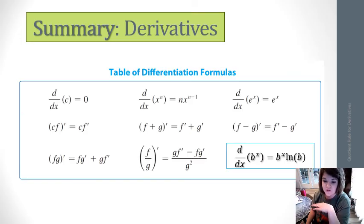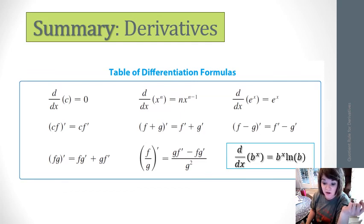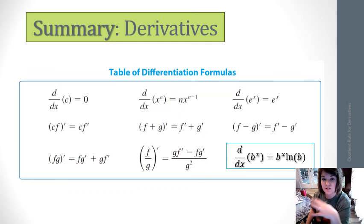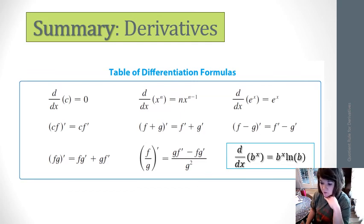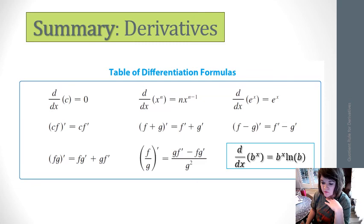Look over this table of differentiation formulas and note all the ones we've learned: the derivative of a constant is zero, a constant times a function brings it down, the power rule (bring down the exponent and reduce the power by one), the derivative of e^x, the derivative of an exponential function, the product rule, and now the quotient rule. You have a lot of knowledge right now.